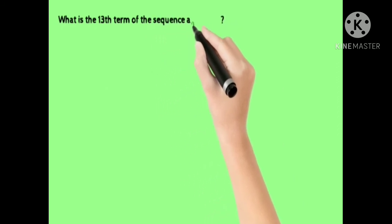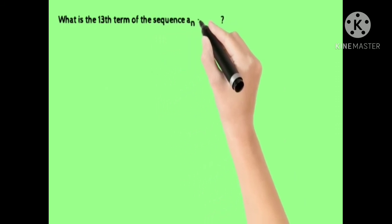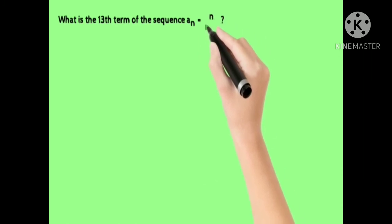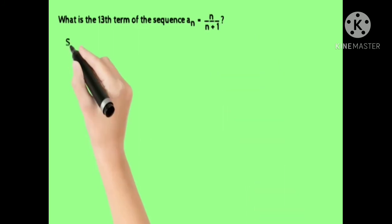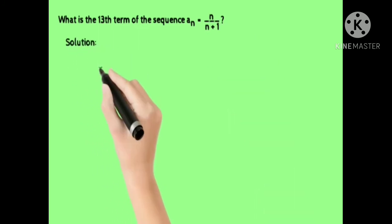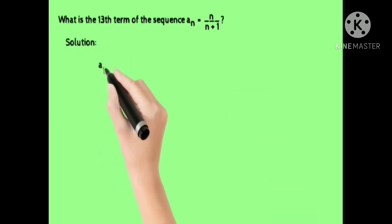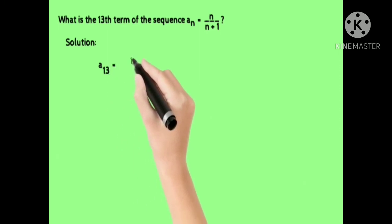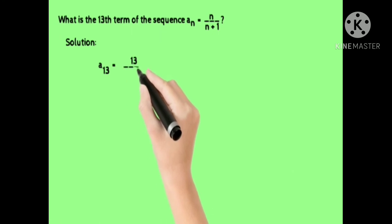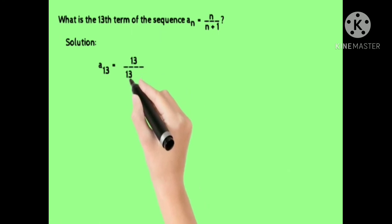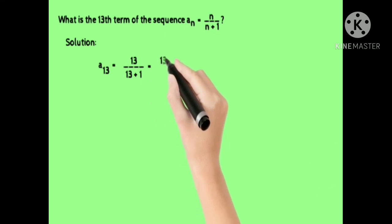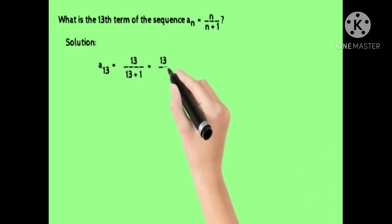Another example: what is the 13th term of the sequence where a sub n is equal to n over n plus 1? You are only looking for the 13th term, so plug in 13 for n. That is equal to a sub 13 equals 13 over 13 plus 1. Simplify: 13 over 14.